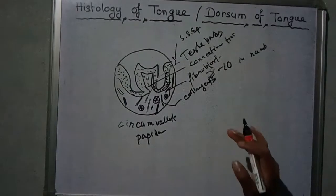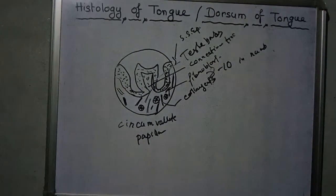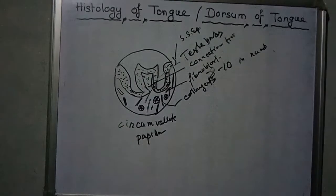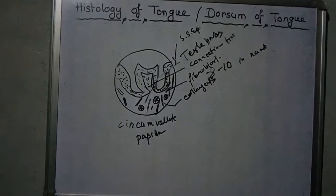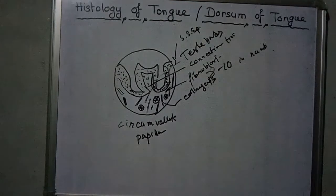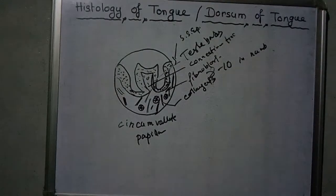The posterior parts of the tongue show sharp parallel clefts bounded by folds of mucous membrane containing taste buds. This was a brief description of the filiform, fungiform, and circumvallate papillae. Thank you for watching this video.